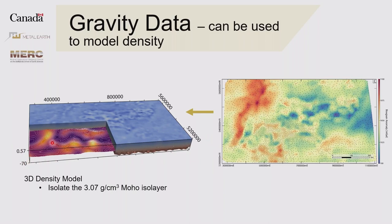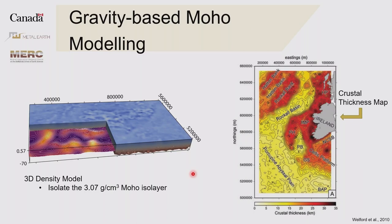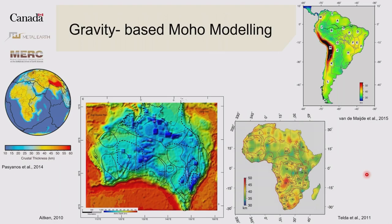This sort of modeling isn't new. I did my PhD at Memorial, so I was exposed to Dr. Kim Welford's work, who does this quite a bit in rifted margins in the marine environment — putting together 3D density models, extracting the isolayer surface to get the moho surface, and from that crustal thickness, using satellite gravity data. This modeling has been done all around the world, and the extreme case is a crustal thickness model for the entire world — the Crust 1.0 model — coarse resolution but global coverage.